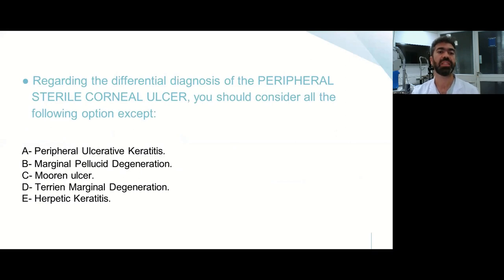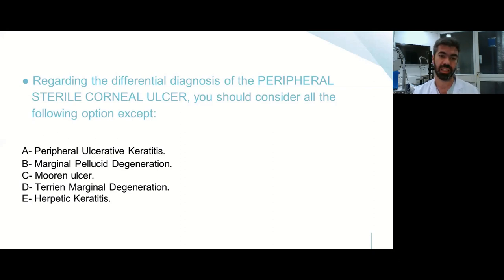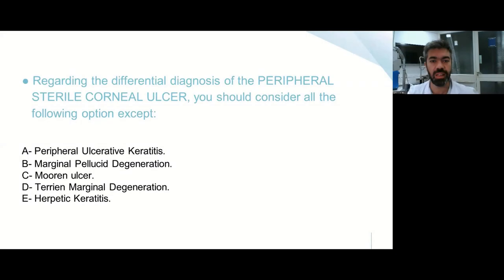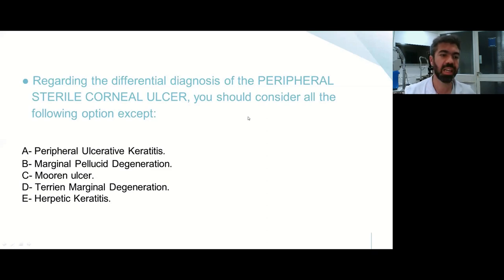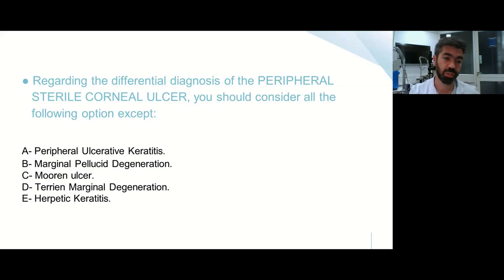Regarding the differential diagnosis of peripheral sterile corneal ulcers, you should consider all of the following except one: peripheral ulcerative keratitis, marginal pellucid degeneration, Mooren's ulcer, Terrien's, or herpetic keratitis. The answer is B — marginal pellucid degeneration — because it has been described in association with keratoconus, not with a type 3 or 4 inflammatory immune system response.